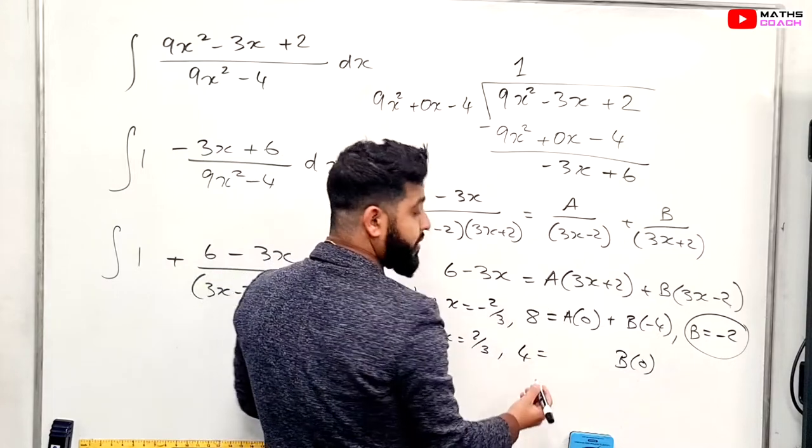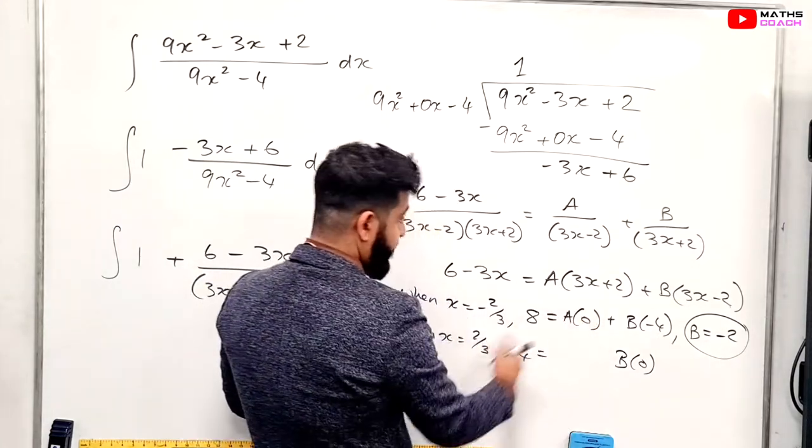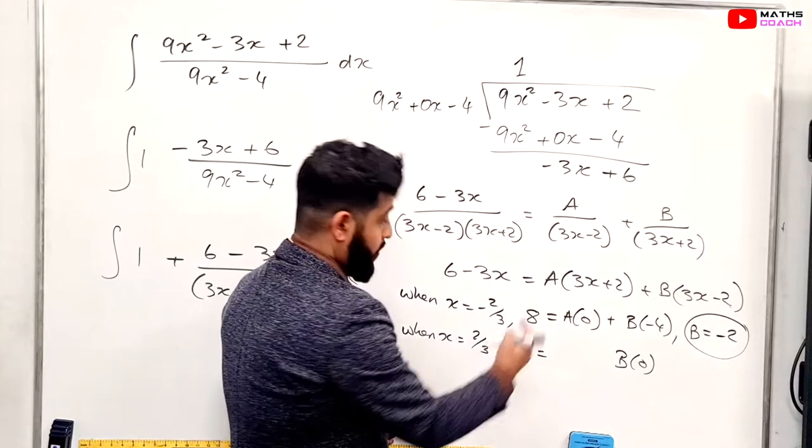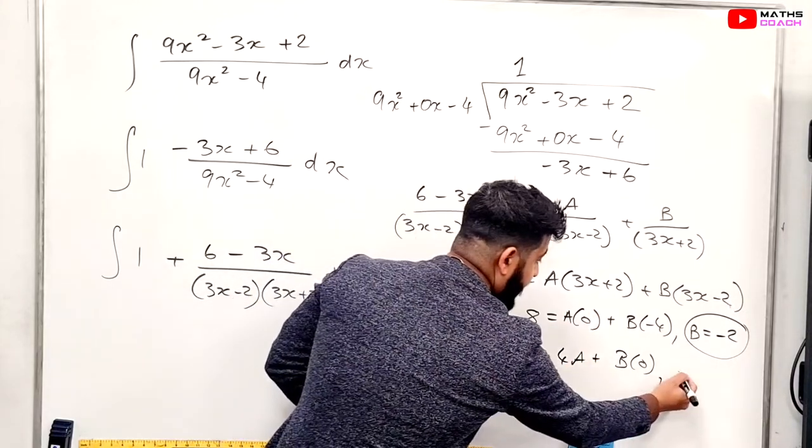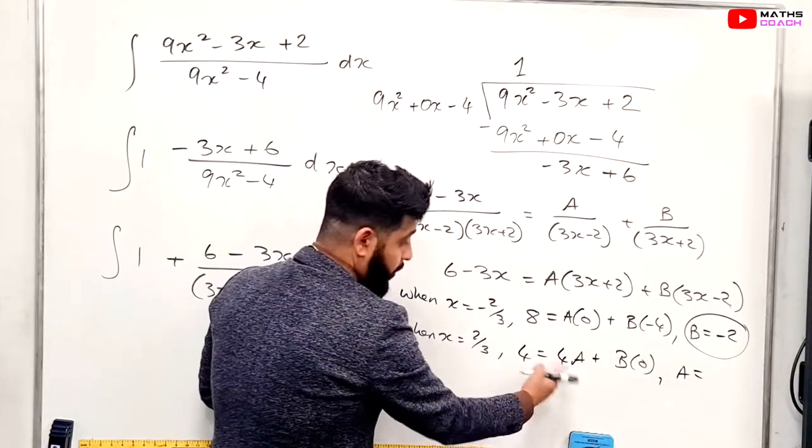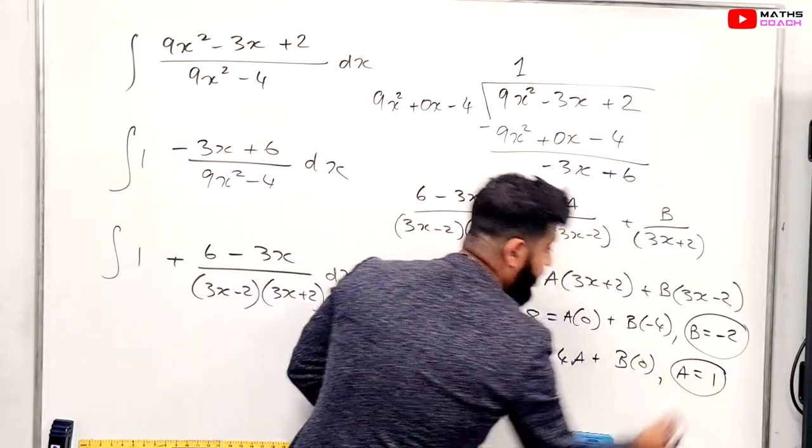And what's a, please? When we have 2 over 3 in here? We have 4. So therefore, 4a. So therefore, a would be equal to 1. 4 divided by 4. a is equal to 1.